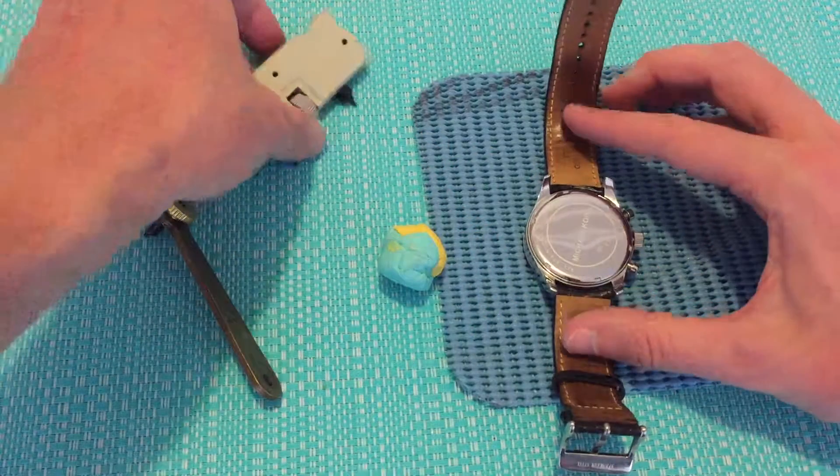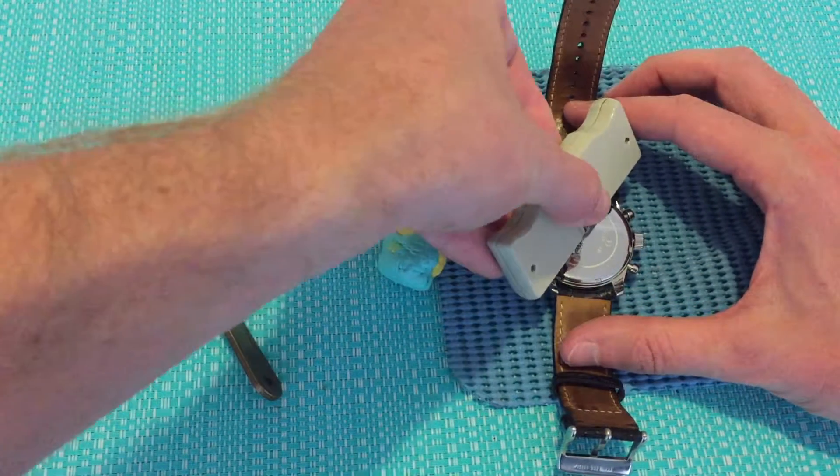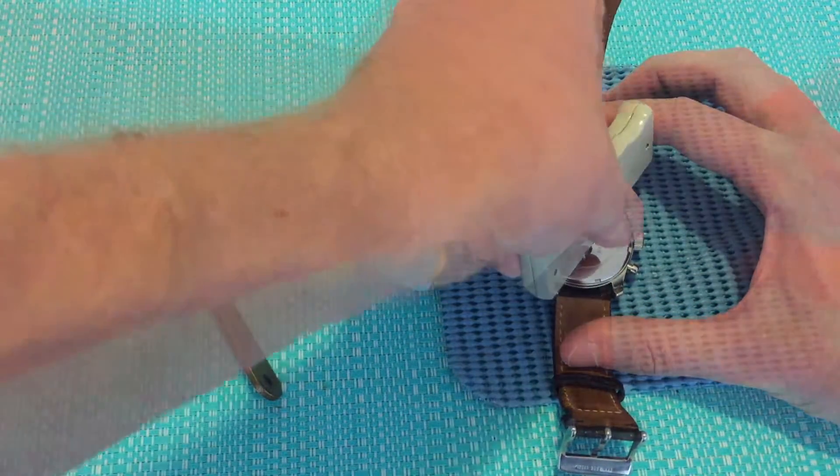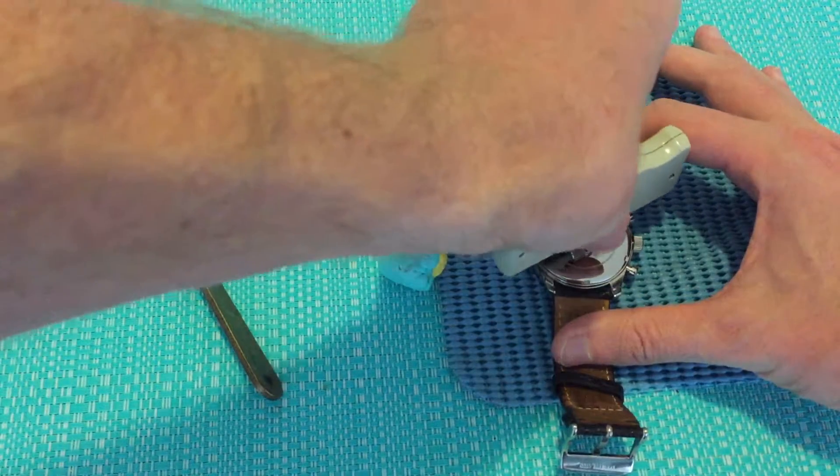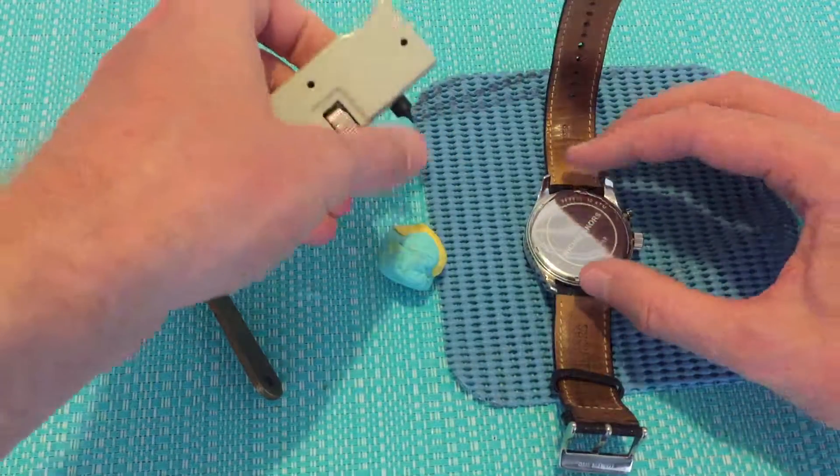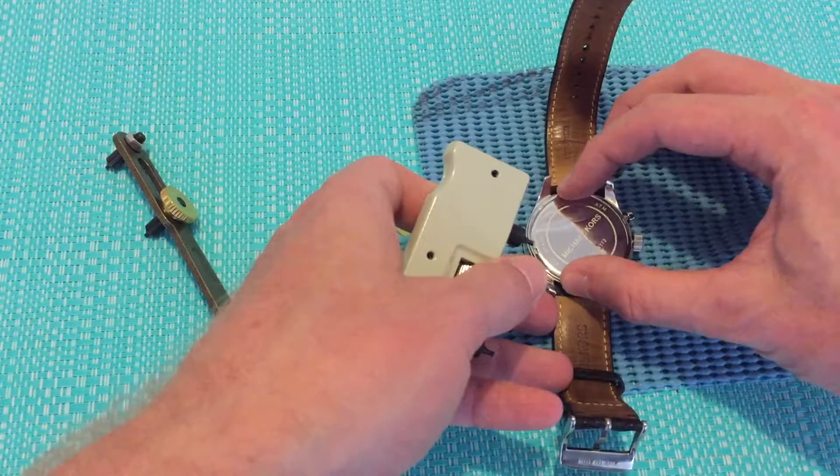So firstly, just hand tighten. Get your case opening tool. Then with it lining up at the back, you're just going to tighten and make sure it's in place.